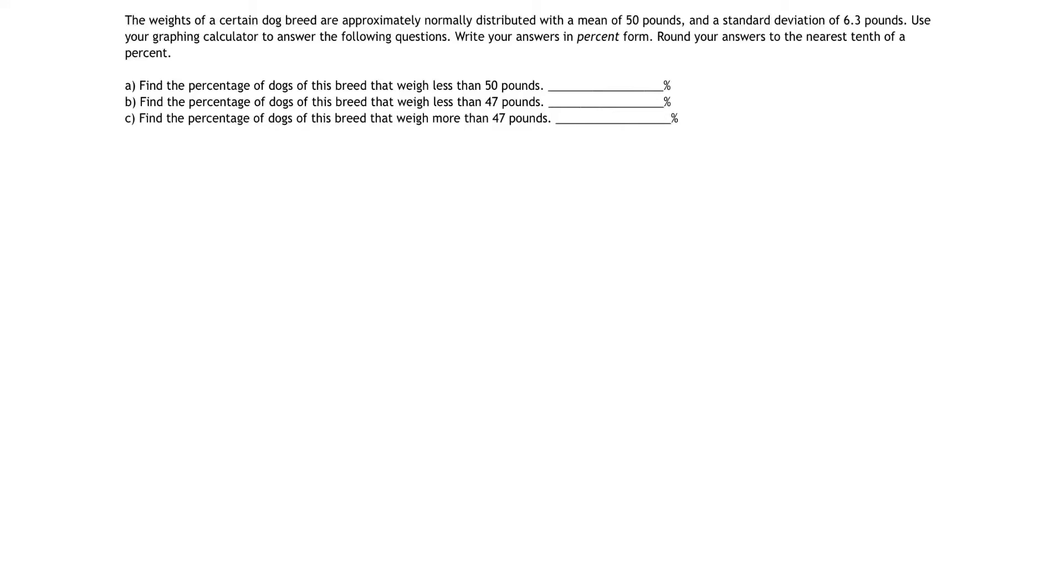The weights of a certain dog breed are approximately normally distributed with a mean of 50 pounds and a standard deviation of 6.3 pounds. We're asked several questions: A, find the percentage of dogs that weigh less than 50 pounds. B, find the percentage of dogs that weigh less than 47 pounds. And C, find the percentage of dogs that weigh more than 47 pounds.